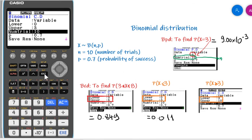And for the opposite, for X being greater than or equal to 3, 3 is the lower value, and the upper value has to be equal to N.